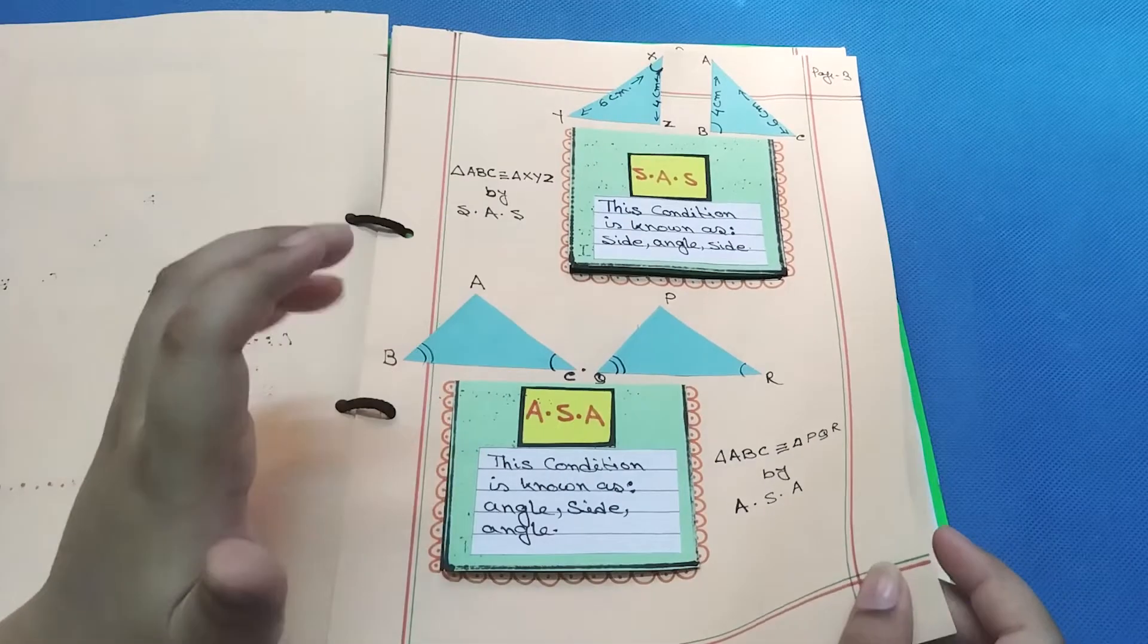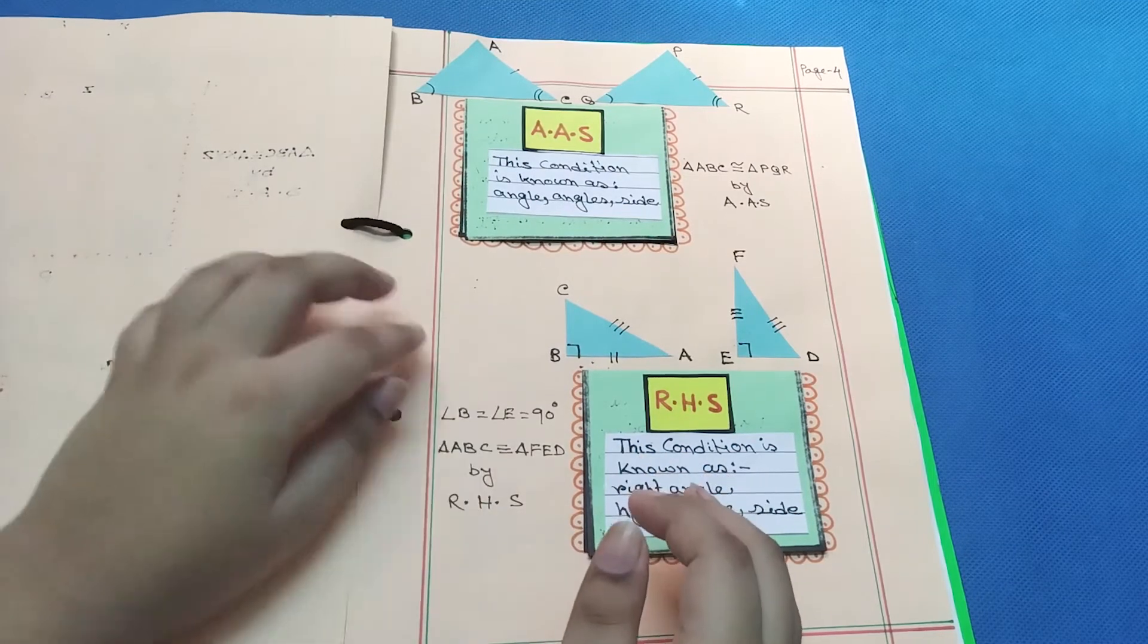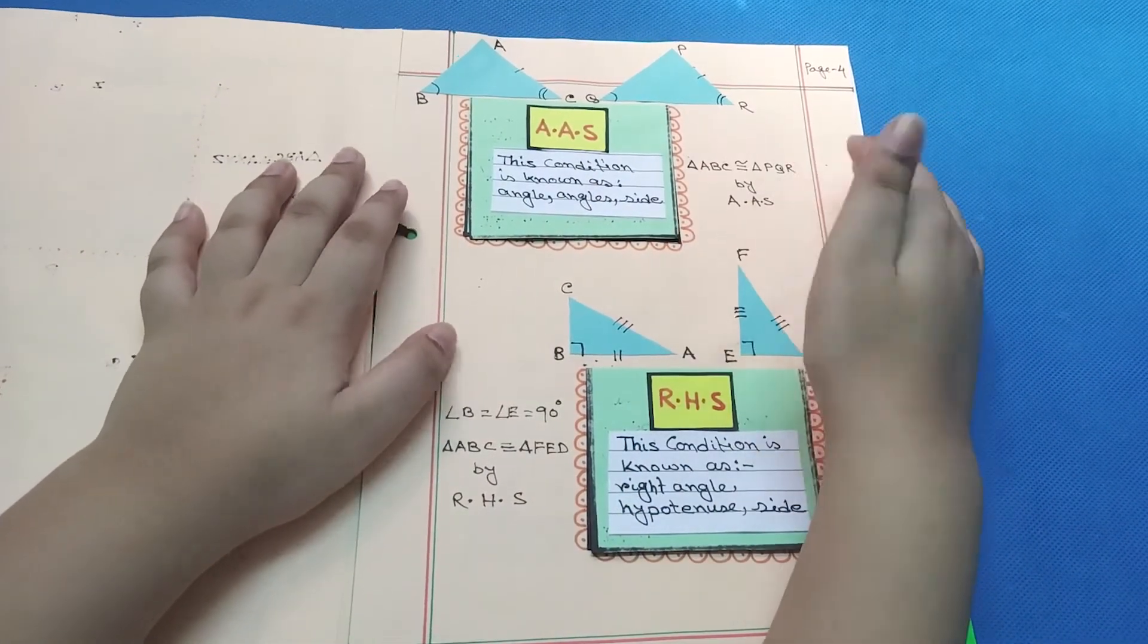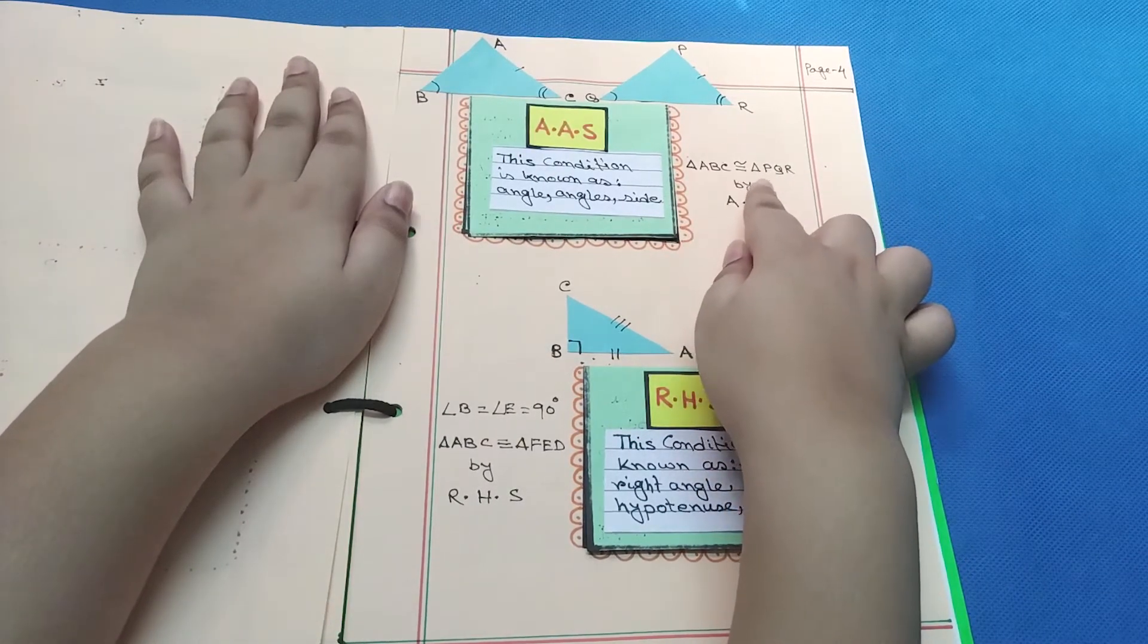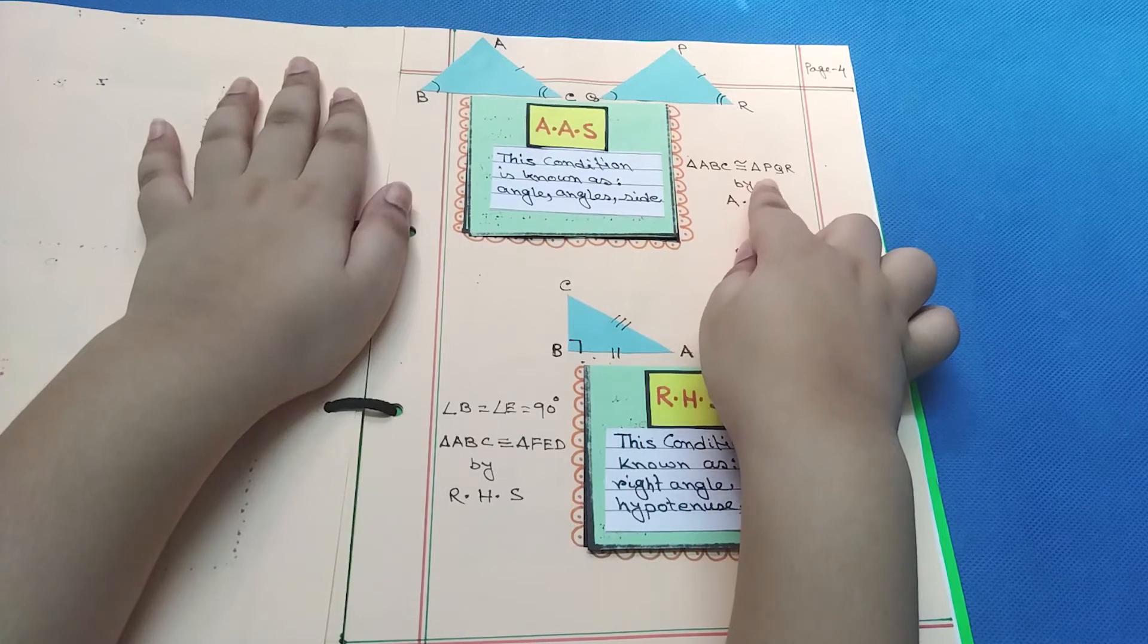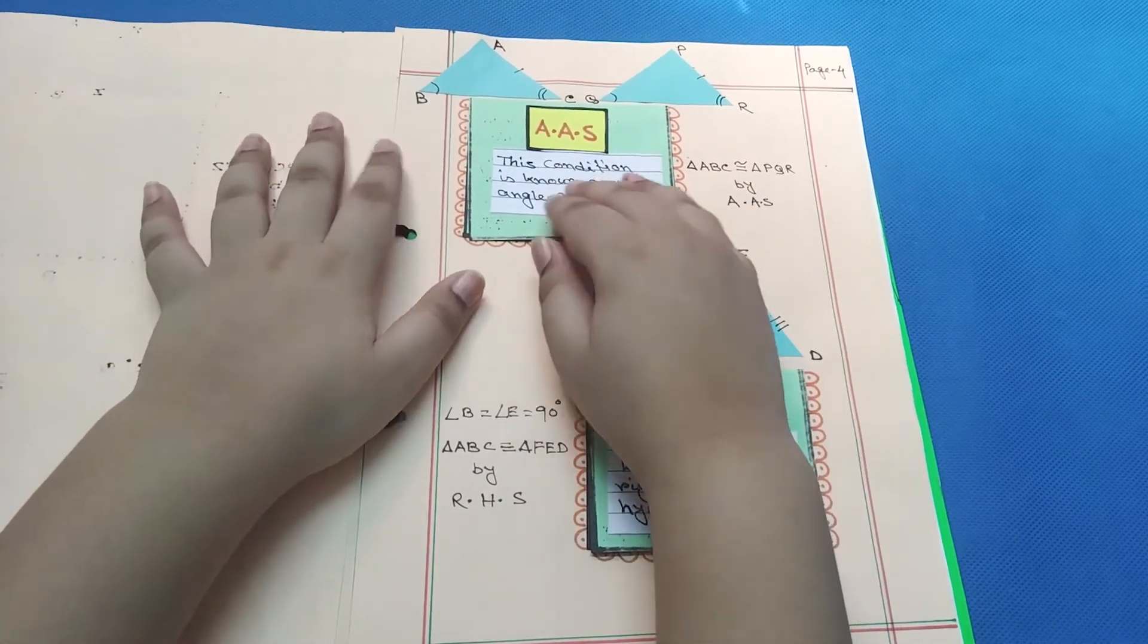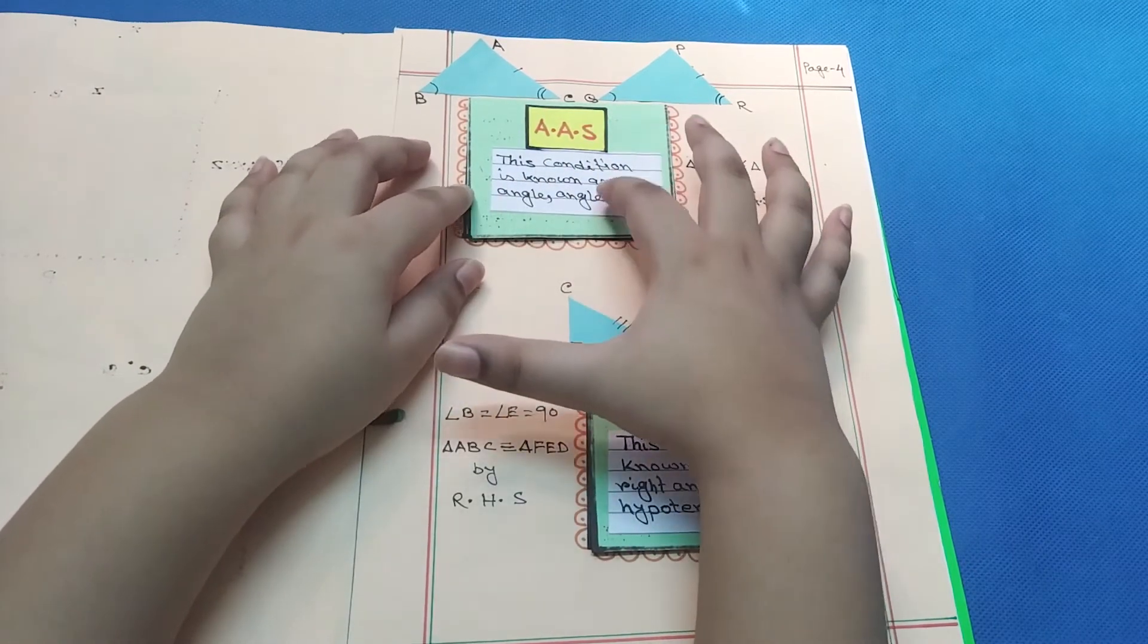Next page. Page four. I drew another figure: triangle ABC equals triangle PQR by AAS. AAS, this condition is known as Angle-Angle-Side.